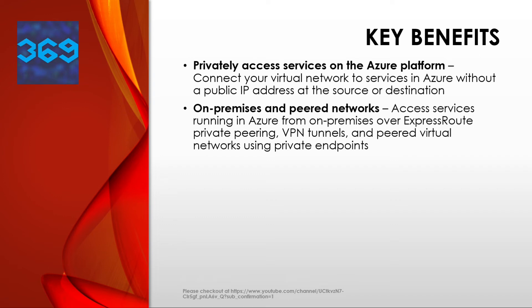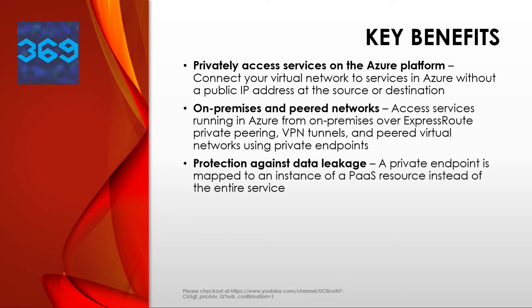The next key benefit is on-premises and peered networks. You can access services running in Azure from on-premises over ExpressRoute private peering, VPN tunnels, and peered virtual networks using private endpoints. There is no need to set up public peering or traverse the internet to reach the service. Private Link provides a secure way to migrate workloads to Azure.